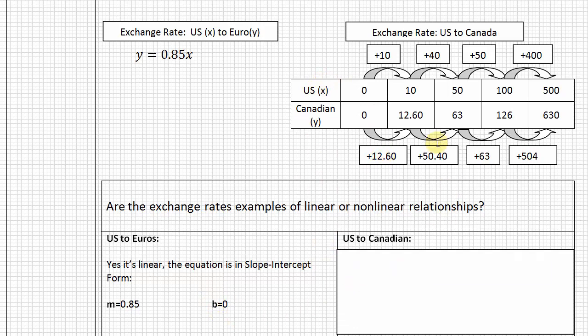If we go ahead and look at our work to decide if this table is linear or non-linear. At first glance, we're looking and we see really different jumps. X goes from plus 10, plus 40, plus 50 to plus 400. And for Canadian, we see plus $12.60, plus $50.40, plus 63, plus 504. But if we look, we can kind of see some patterns in the numbers where we see really similar digits or multiples of the same value. We need to do more work to prove it one way or the other.